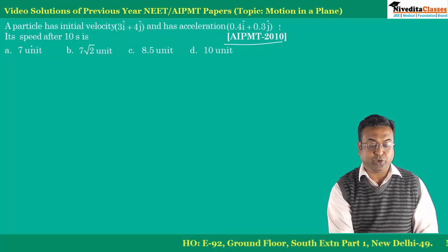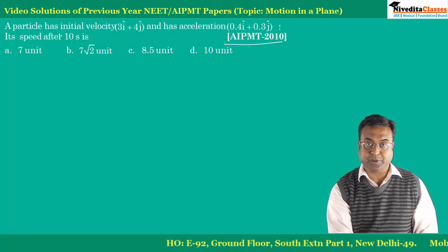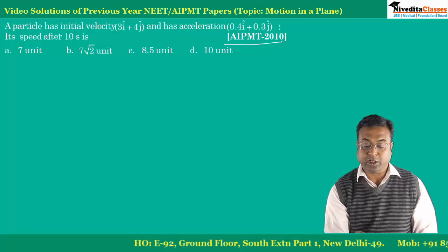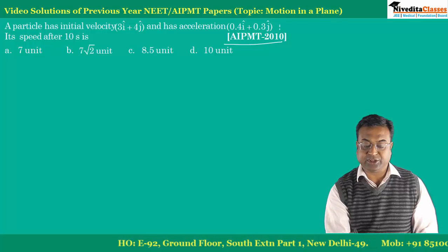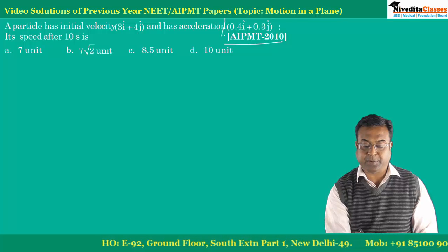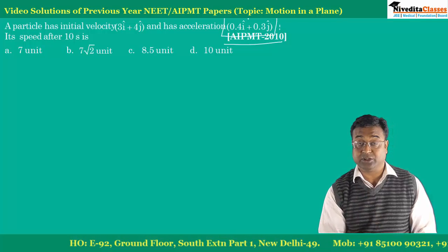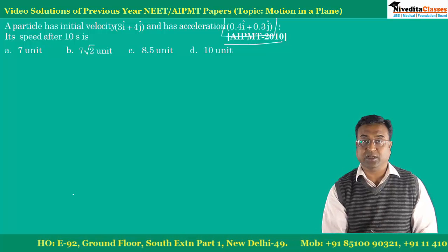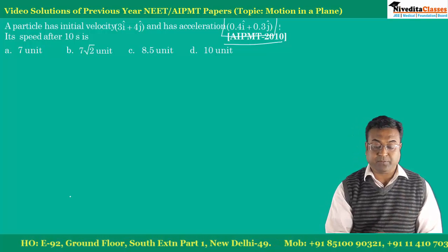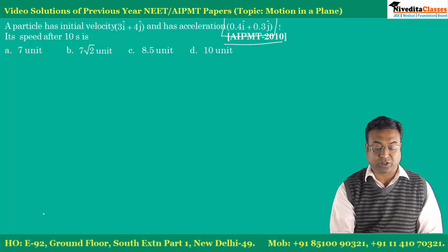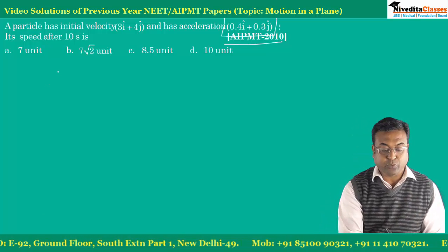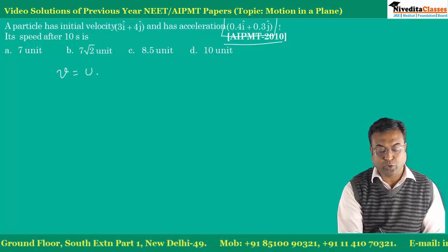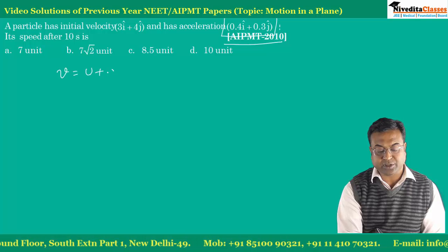Speed final puchhi gai hai, initial speed di gai hai, acceleration diya gai hai. Aur ye acceleration time pe depend nahi karta, constant acceleration hai. Constant acceleration ke liye hum formula v = u + at use kar saktay hai.